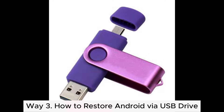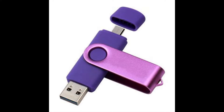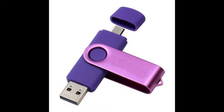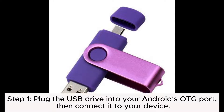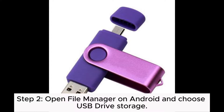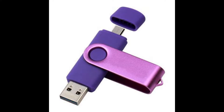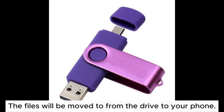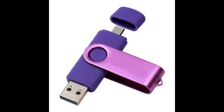Way 3: How to restore Android via USB Drive. If you have backed up your Android data to the USB drive, you can restore Android data via the USB drive directly. Step 1: Plug the USB drive into your Android's OTG port, then connect it to your device. Step 2: Open File Manager on Android and choose USB Drive Storage. Open it and select the files you want to move to your device, then hit the More Move icon. The files will be moved from the drive to your phone.